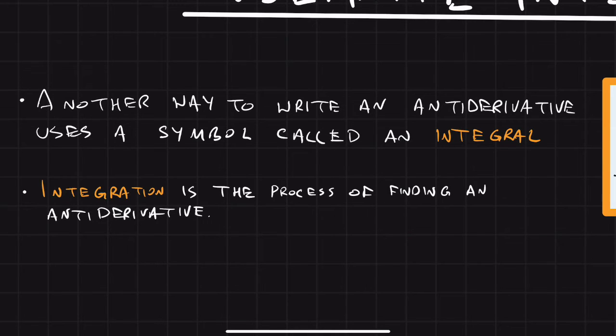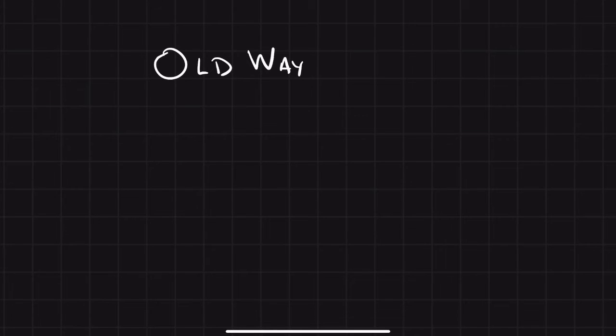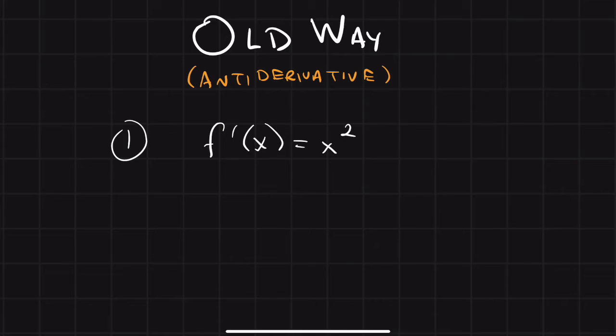And integration is the process of finding an antiderivative. So the old way of finding antiderivatives, which you really only learned just a few days ago, you were given a function's derivative. Let's say f prime of x is equal to x squared and you used antiderivatives to find f of x.